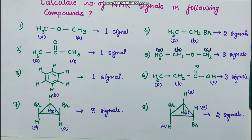For CH₃CH₂Br: the three CH₃ protons are equivalent but different from the CH₂ protons (which are adjacent to bromine), so we get two signals. For a compound with an oxygen group where one CH₃ is nearest to oxygen, giving one signal; a CH₂ that is near oxygen but also attached to another CH₃, giving one signal; and another CH₃ further from oxygen, giving one signal — total three signals. For a compound with a C=O group: the adjacent CH₂ gives one signal, the CH₃ group gives one signal, and the hydroxyl proton gives one signal — total three signals.